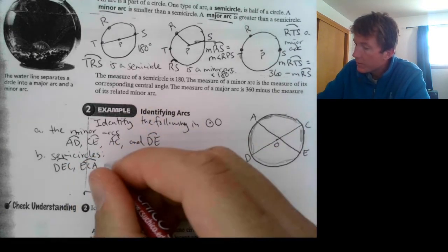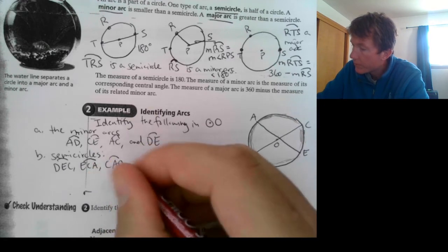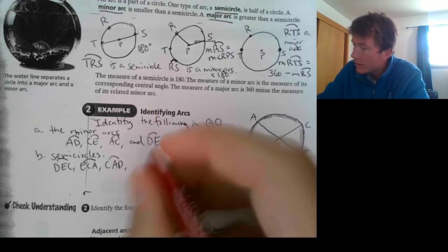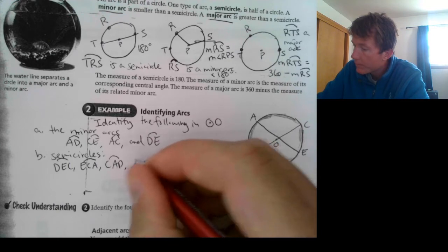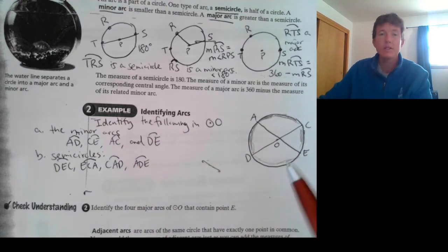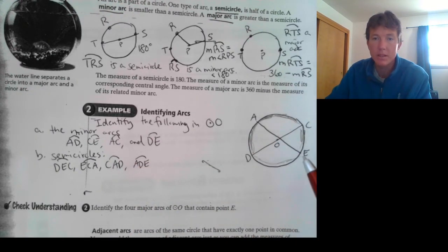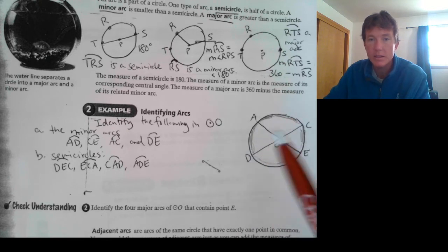CAD, AD, and ADE. These are all semicircles. If you listed them in the opposite direction, like EDA, DAC, ACE, and CED, that's okay.